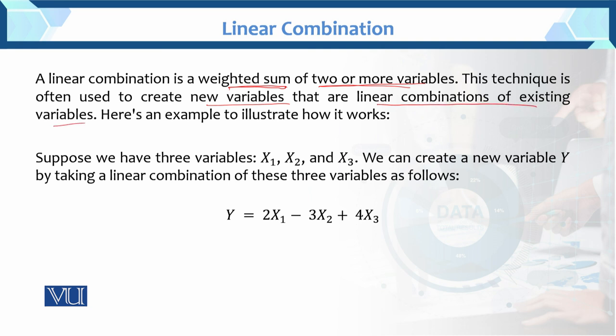Suppose we have three variables: X₁, X₂, and X₃. I'm using this notation - X₁, X₂, X₃ - because the variable names behind these would be specific. Rather than recalling them repeatedly, we just say we have three variables X₁, X₂, and X₃.